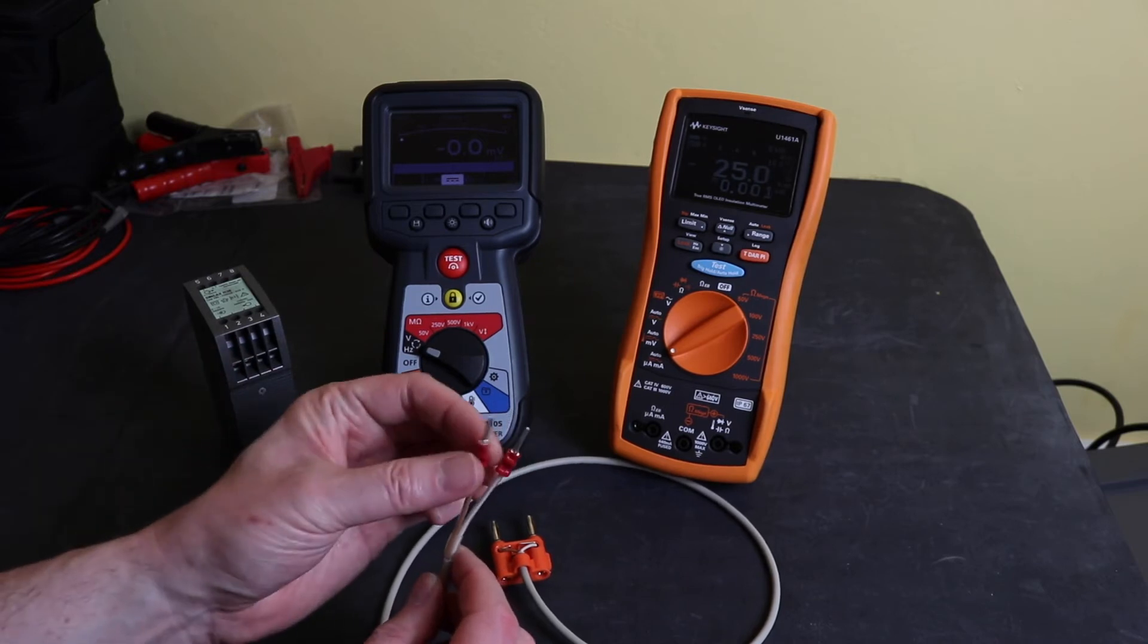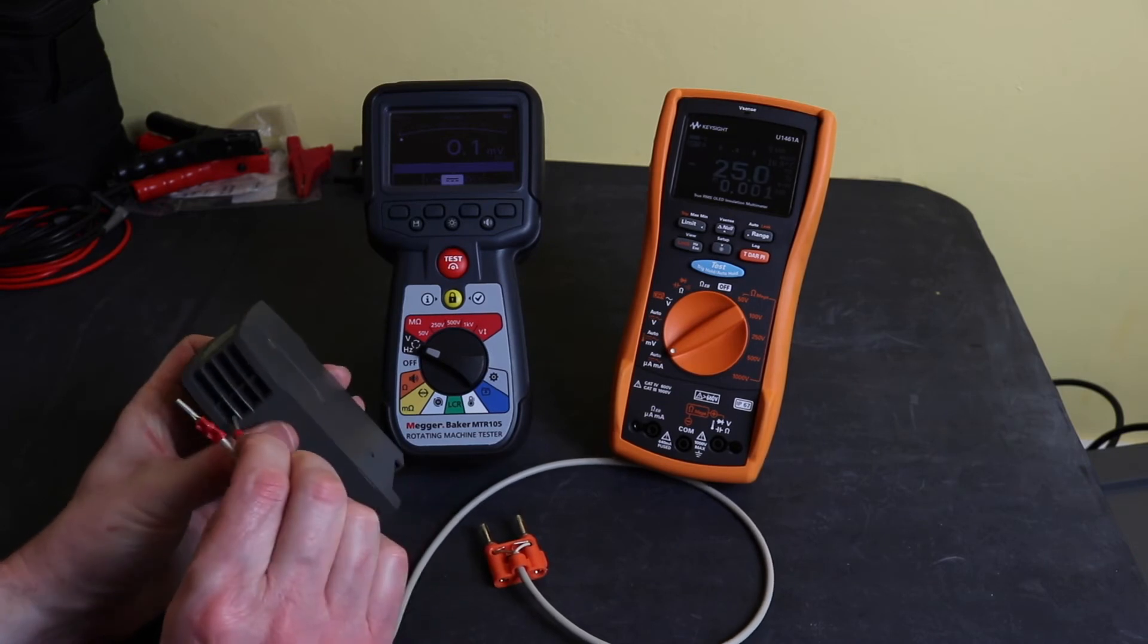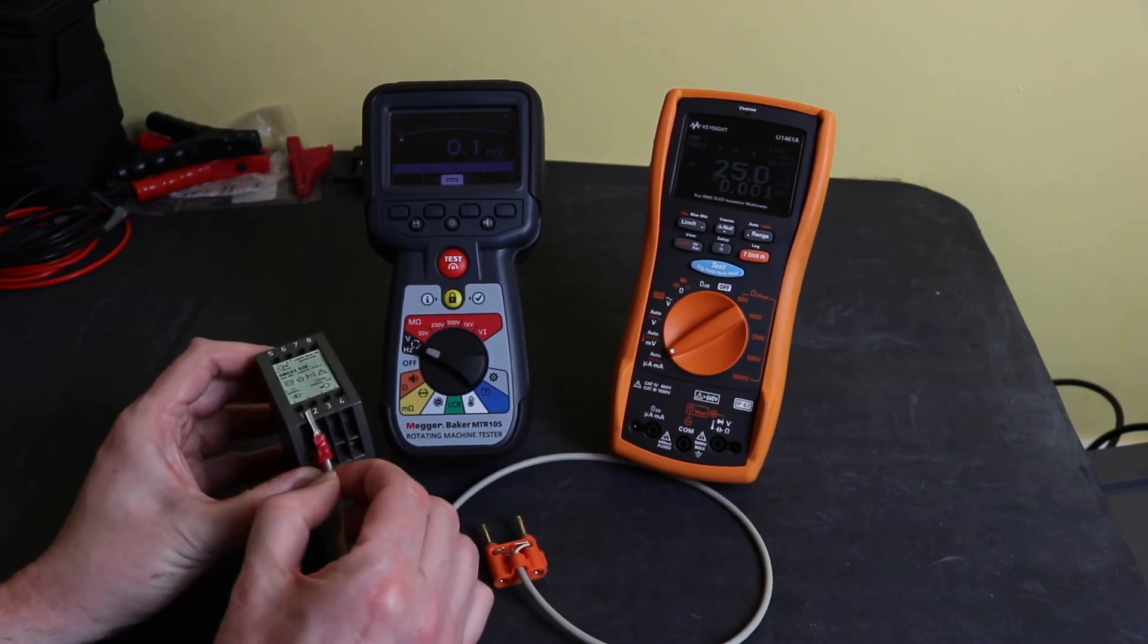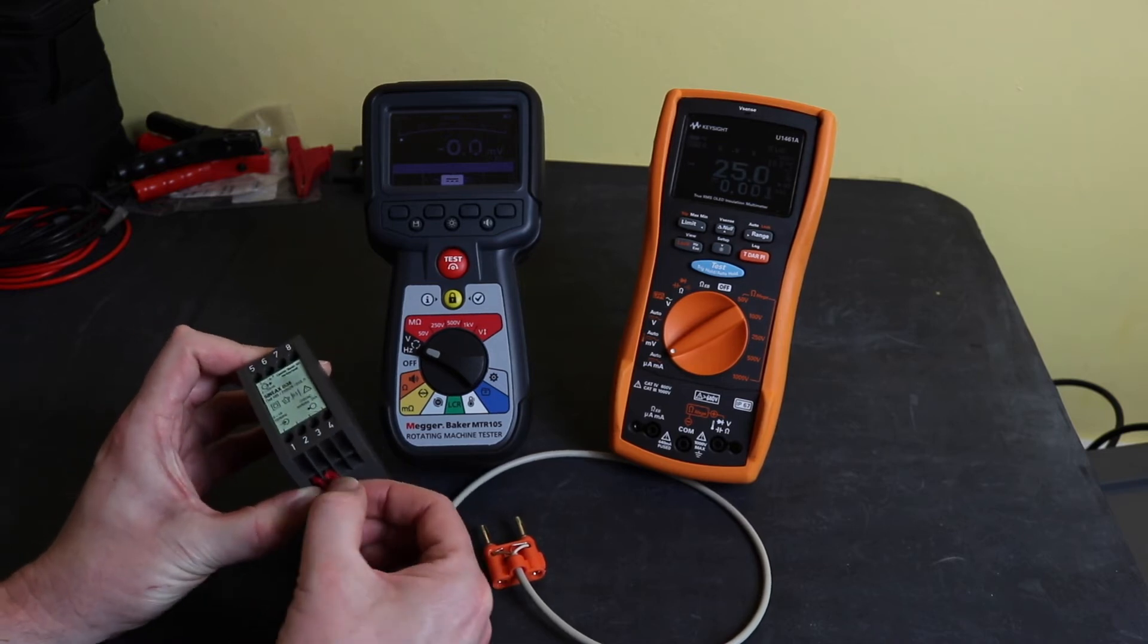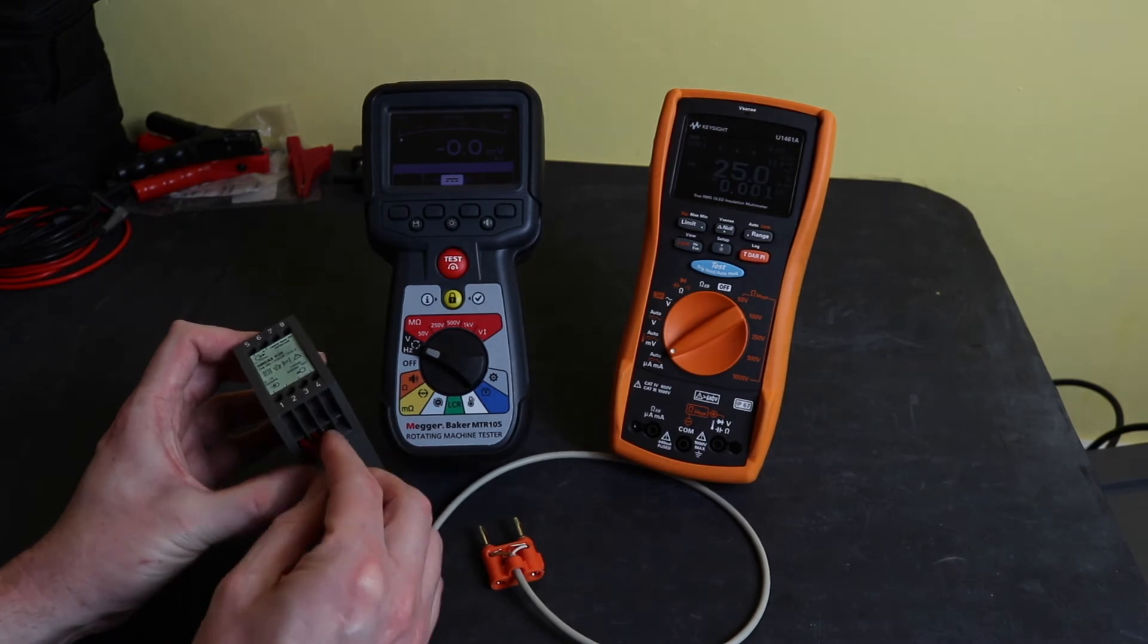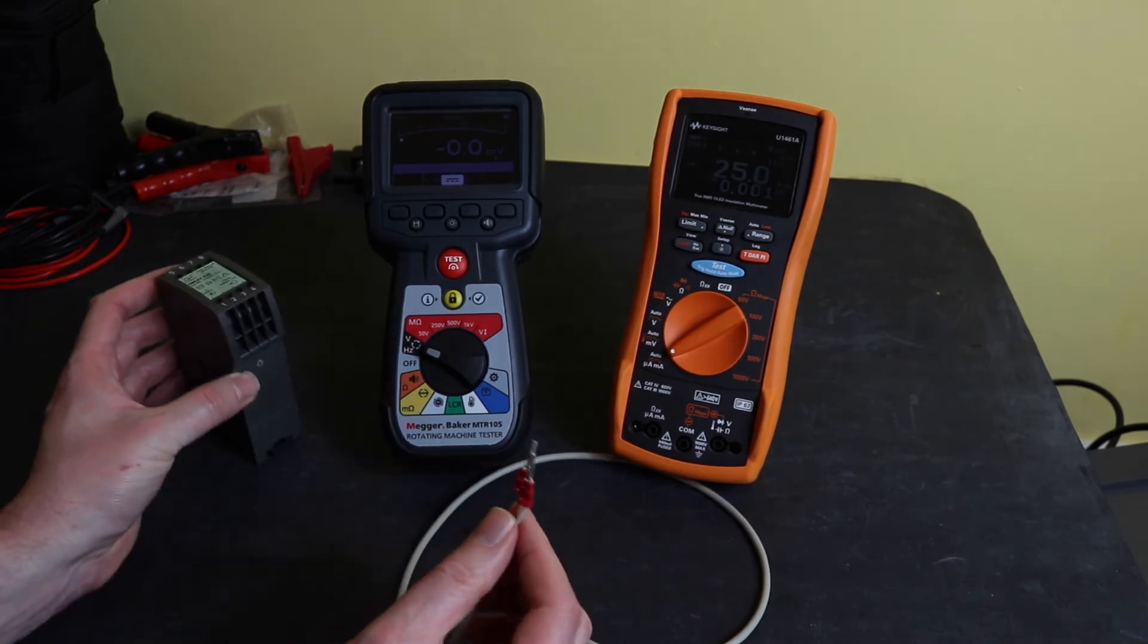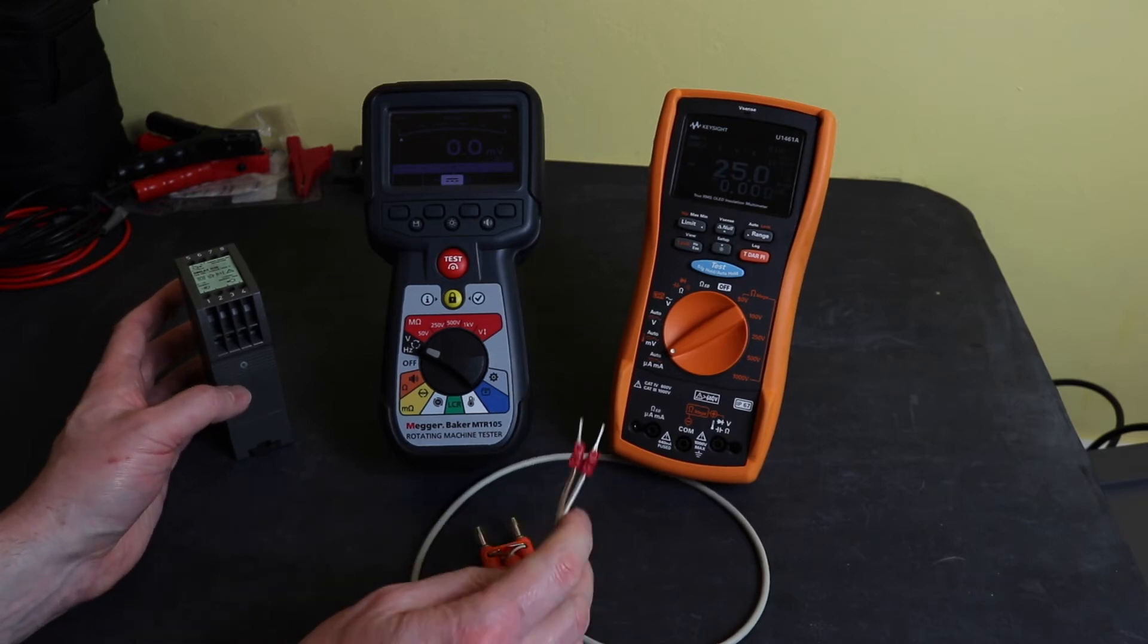I find these better to use than the ferrules for situations where you're constantly taking them in and out of terminals. They are a little bit bulky and you do have to slide them in on their side. They will just about go in but on some smaller terminals it won't. So you kind of have to put them in that way and they're fine but I find them much more robust than a ferrule so I tend to stick to those for this kind of setup.